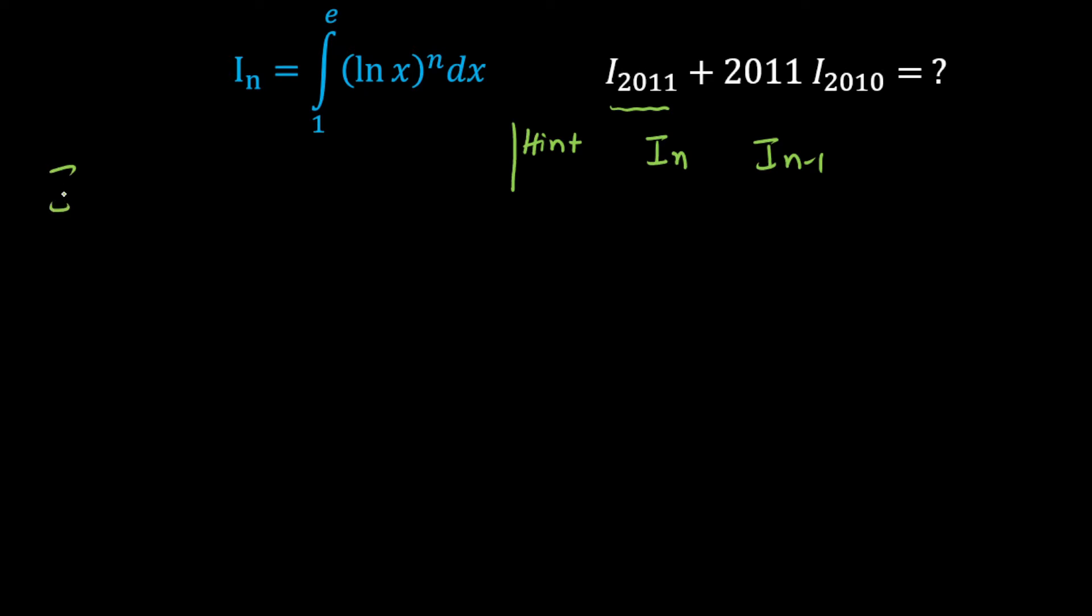So I am going to write I of n as I of n equals integral 1 to e, and I am going to write this as 1 into ln of x whole raised to power n, d of x here. Now I am going to consider 1 as second function and ln of x whole raised to power n as first function. Now here I am going to apply integration by parts.